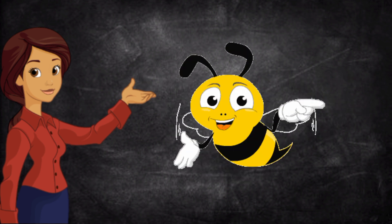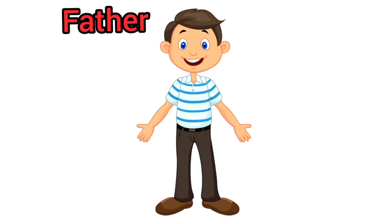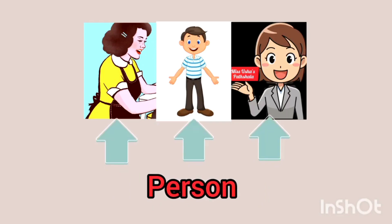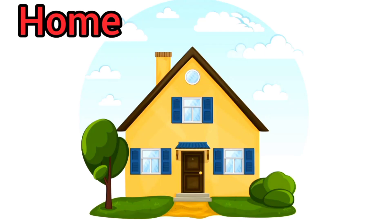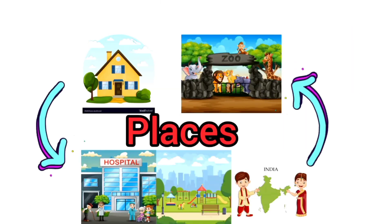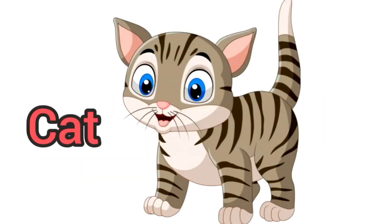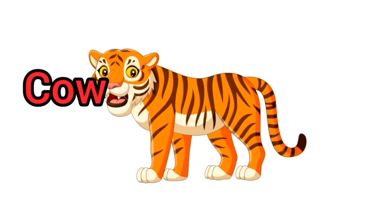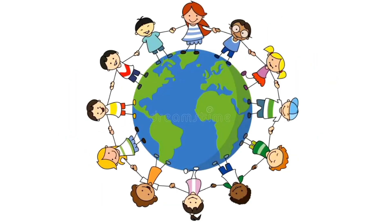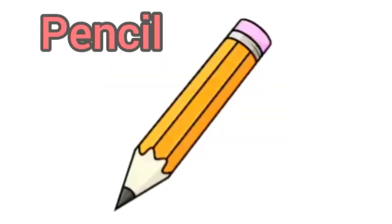Children, here are some examples of nouns. Mother, father, teacher are names of a person. Home, zoo, hospital, park, India are names of places. Dog, cat, cow, tiger are names of animals. Things we see also have names: ball, pencil, chair, hat are names of things.